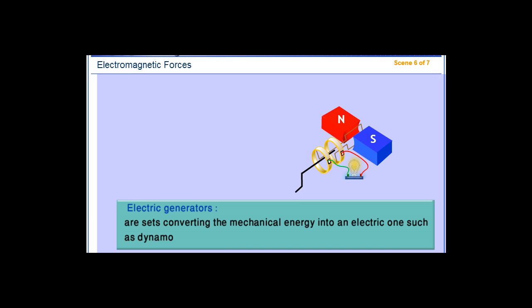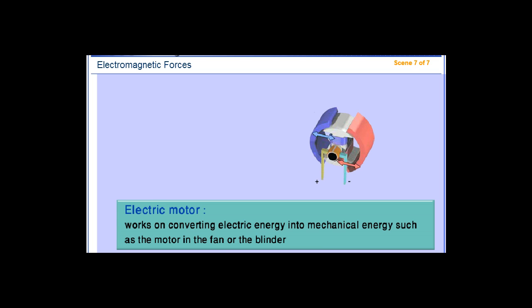Electric generators are sets converting mechanical energy into electric energy such as dynamo. Electric motors work on converting electric energy into mechanical energy such as the motor in the fan or the blender.